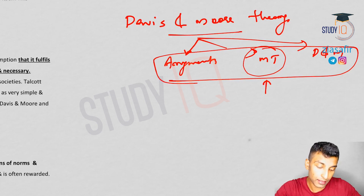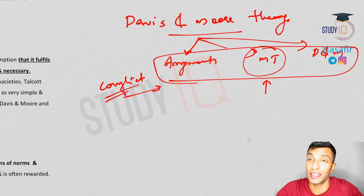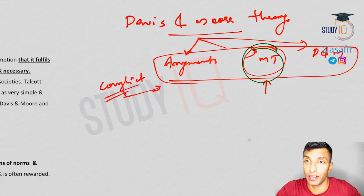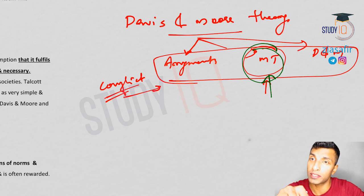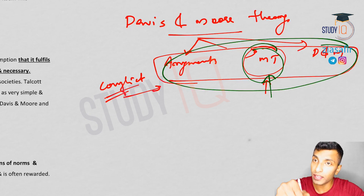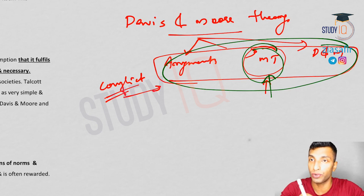Davis and Moore make certain propositions. Then Melvin Tumin will challenge these arguments or raise certain objections and criticisms. Then Davis and Moore will again clarify those arguments. So if the theory is asked on Davis and Moore, these three parts you need to write. Melvin Tumin's objections are actually part of the theory because after that, Davis and Moore clarify and improve the theory — so the total theory is this much. After that, if the question says critically analyze, you need to do the critical analysis with some other concepts like the conflict perspective.